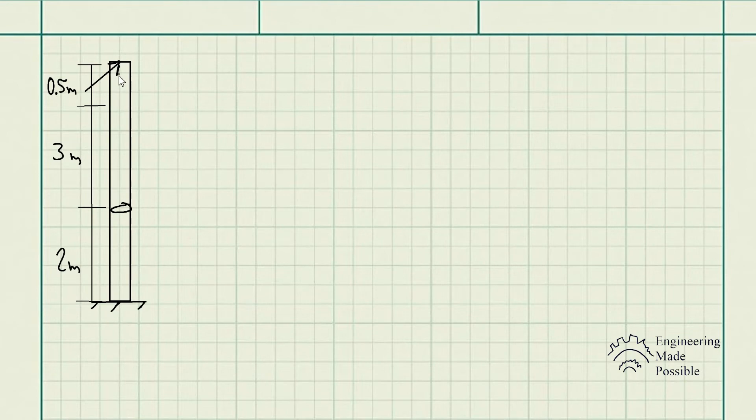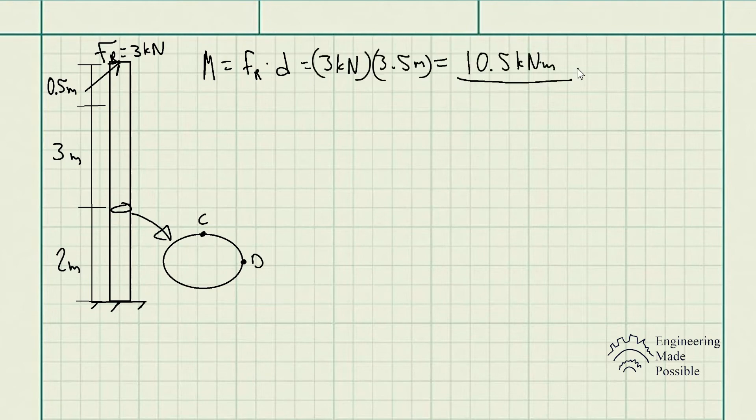Now I went ahead and drew the post again with the necessary dimensions. We have the resultant force FR being applied here. In this particular case, since we were asked to look at the stress states at C and D, this is where we're going to be calculating the moment with respect to this specific position in the post. In other words, to calculate the moment is the resultant force times the distance from that position, which is 3 plus 0.5 meters. Let's calculate the moment, which gives us 10.5 kilonewton meters.